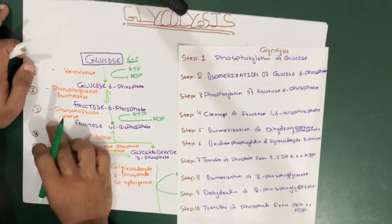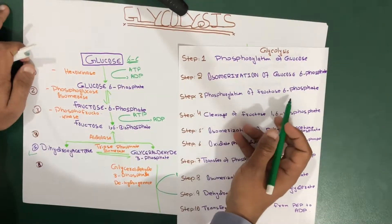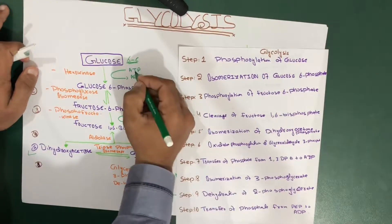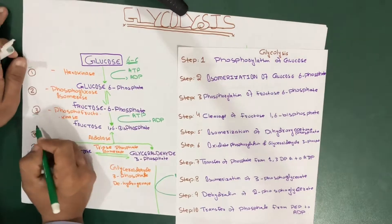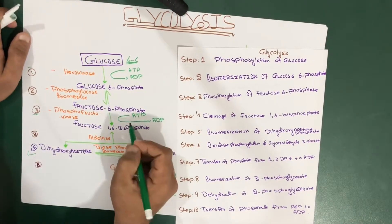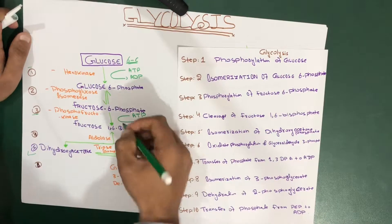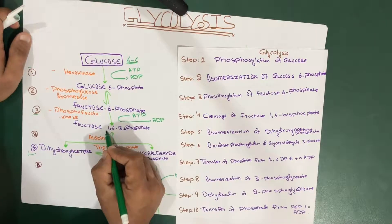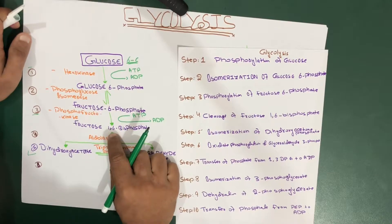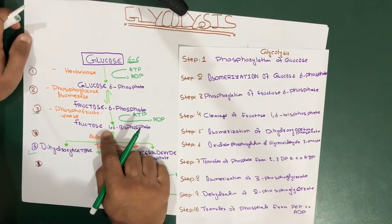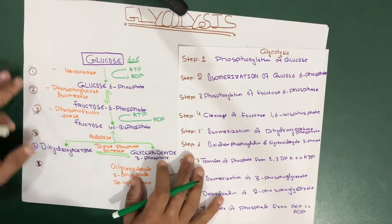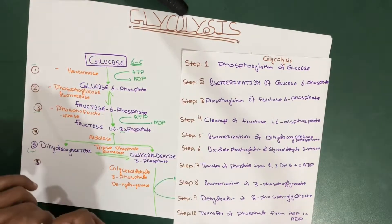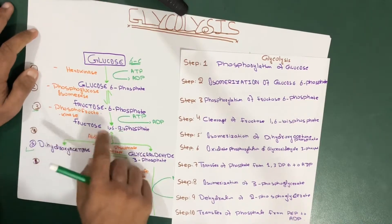Step three is another phosphorylation — this time of fructose-6-phosphate. We add another phosphate group using ATP, which is converted to ADP. This phosphate attaches to carbon number one, so we now have fructose-1,6-bisphosphate. 'Bisphosphate' means there are two phosphate groups.